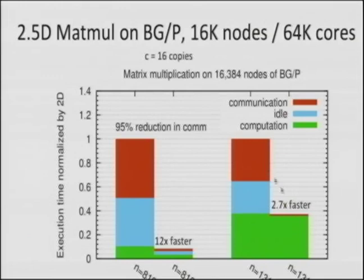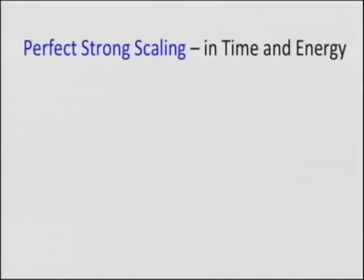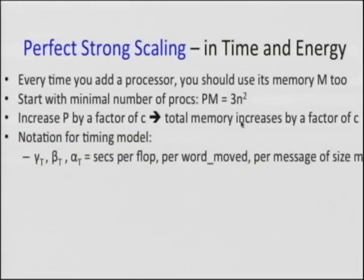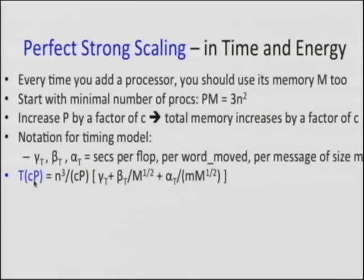This algorithm has a nice property: it gives perfect strong scaling in both time and energy. Every time you add a processor, you get not just its compute but its memory. Start with as few processors as it takes to fit all three matrices, then increase by a factor of C and use the extra memory too. The time scaling is perfect — the flop time, bandwidth, and latency all go down by a factor of C. For energy, each processor burns the same power, but there are C times as many running 1/C as long, so total energy is constant. That's perfect strong scaling in energy.